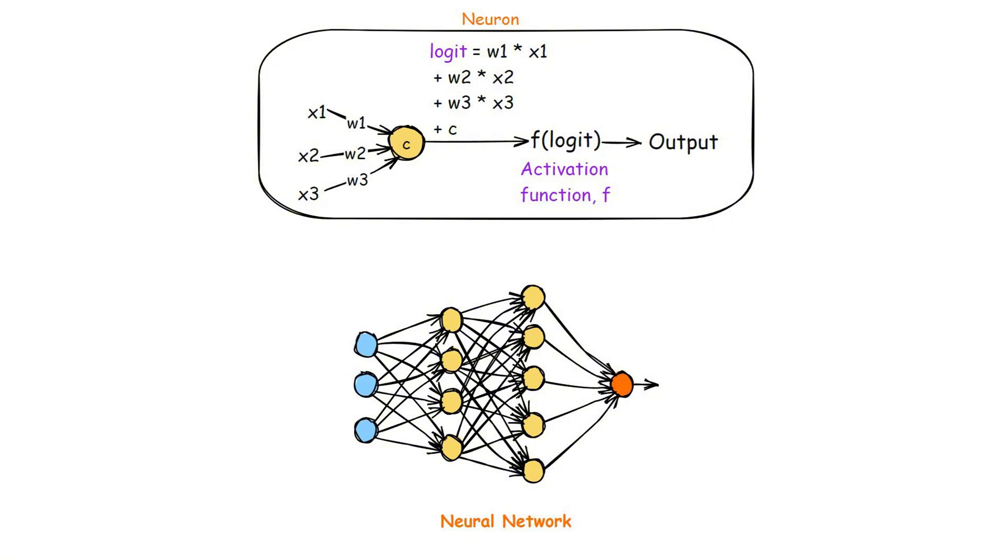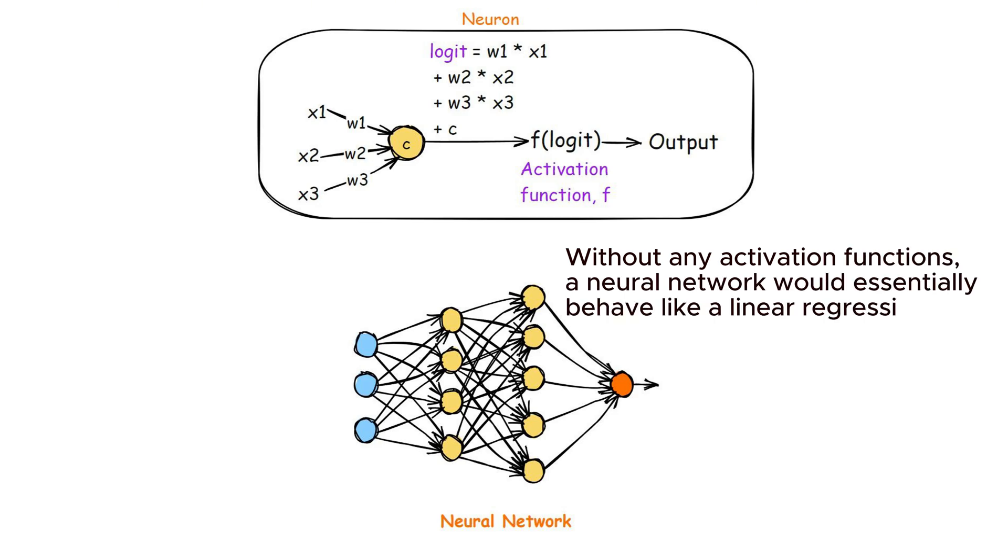The activation function introduces non-linearity to the model, allowing it to learn and represent more complex patterns beyond just linear relationships. Without any activation functions, a neural network would essentially behave like a linear regression model, no matter how many layers it has, because each layer would only perform a linear transformation of the input.